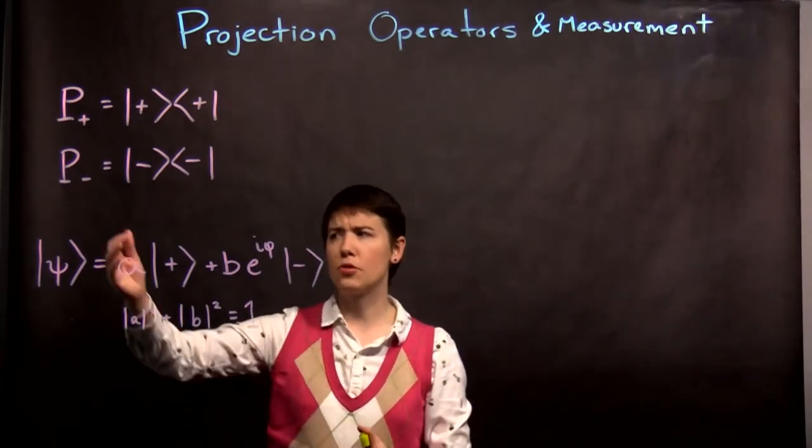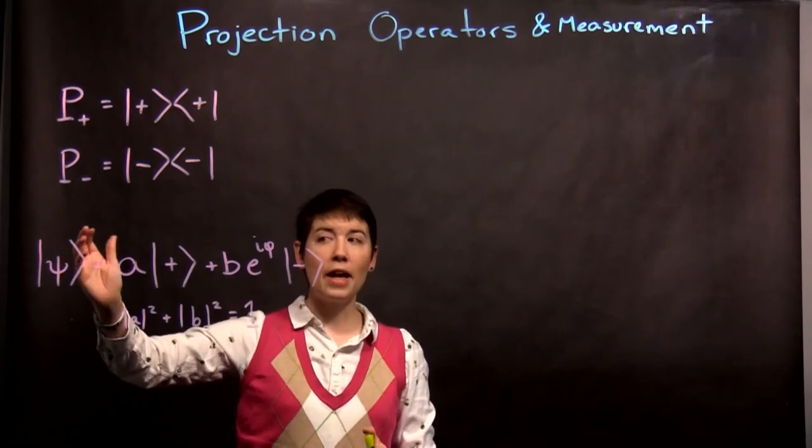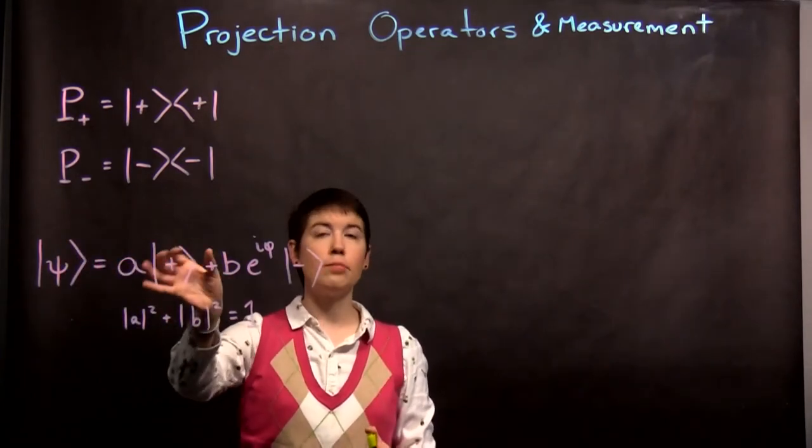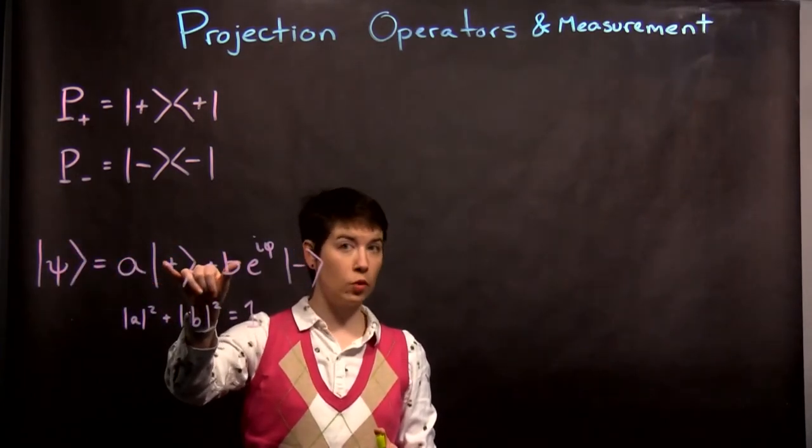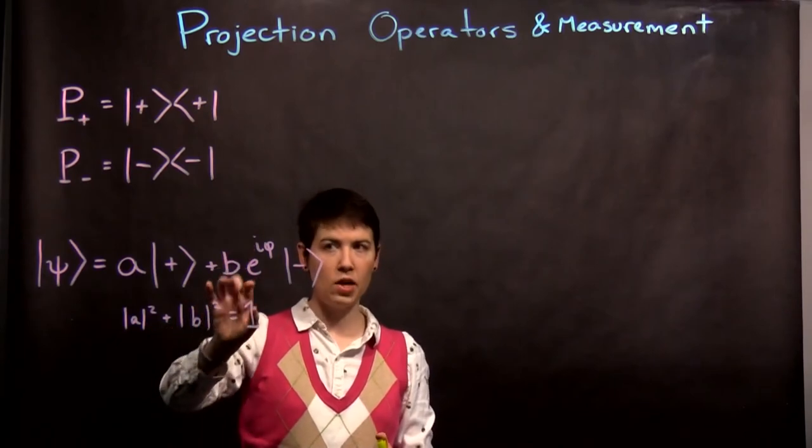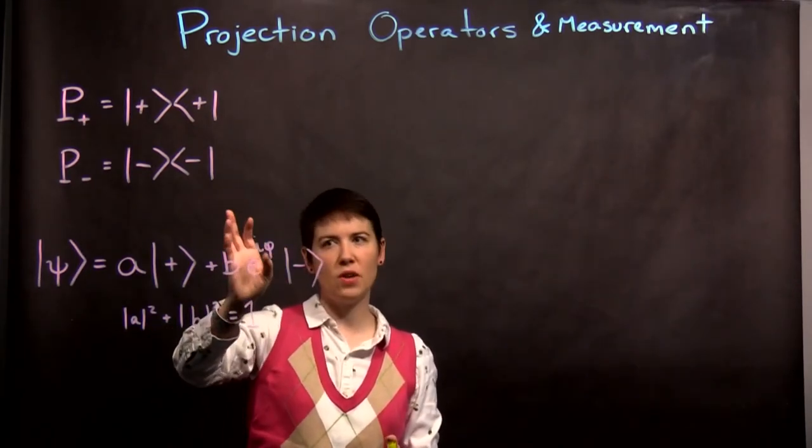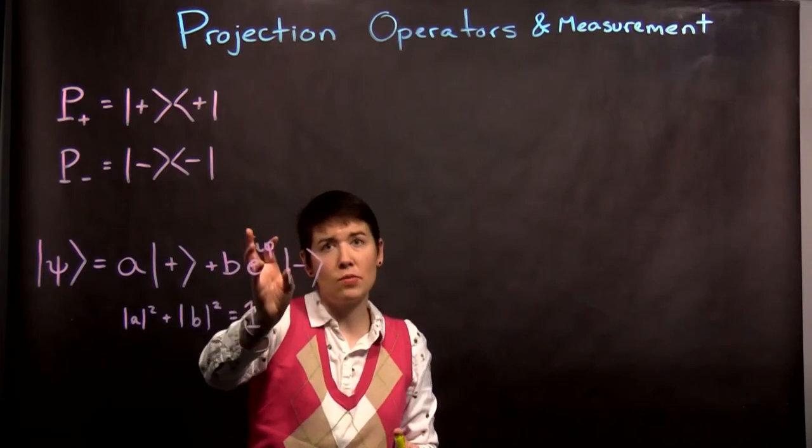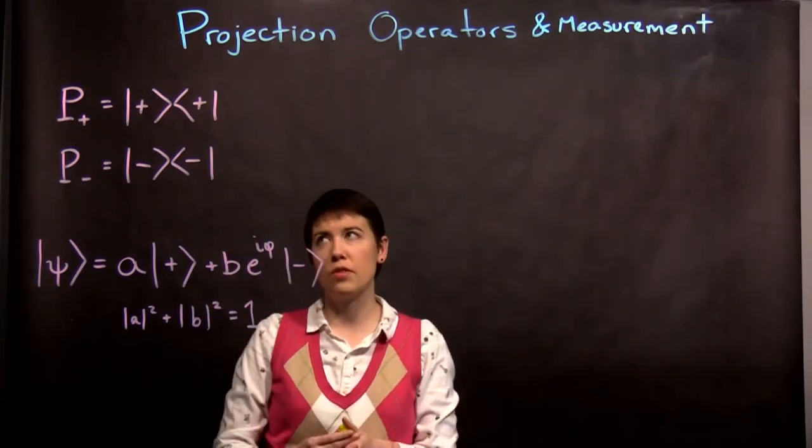So let's think about what happens for some general quantum state. And I've already implicitly said it's normalized. This choice of A and B is already normalized. And I've explicitly said there's some complex phase on the second term. Obviously sometimes that's not true and B is real, but let's work with it this way.